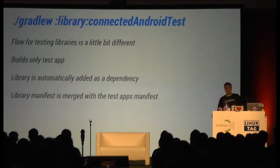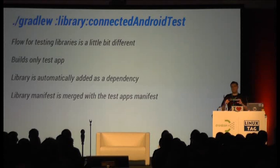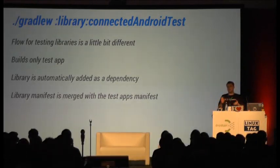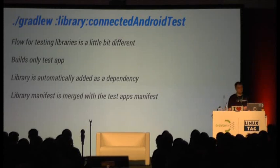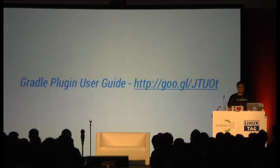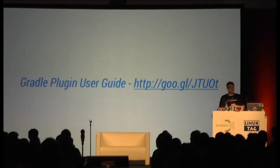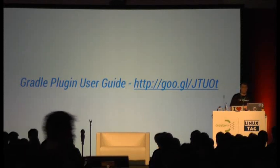The flow for libraries is a little bit different, because you cannot install an Android library on a device — the artifact is an AAR file. So what happens is Gradle just builds the test APK and adds your Android library as a dependency to it, so you actually have your test code and your application code in the same APK. Apart from that, it's very similar to what you have for a regular app. If you want to learn more about Gradle, Xavier Ducrohet, our SDK tools lead, wrote a great Gradle plugin user guide, and we're going to add more documentation to the developer site.